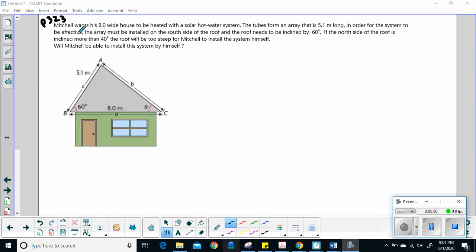Let's look at this example. Mitchell wants his eight meter high house to be heated with a solar hot water system. The tubes form an array that is 5.1 meters long and we want to put it on the south side of the roof, so that's over here. The roof needs to be inclined by 60 degrees. If the north side of the roof is inclined more than 40 degrees, the roof will be too steep for Mitchell to install the system by himself. So we want to know, is he going to be able to do it? We need to find this angle here.